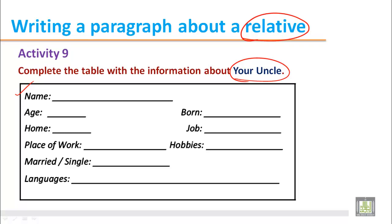Name: we just write the name of your uncle. Think that it is Hassan. Then age: write it is 50. Born: where was he born? We think that he was born in Makkah. Home: where does he live? He lives in Abha.